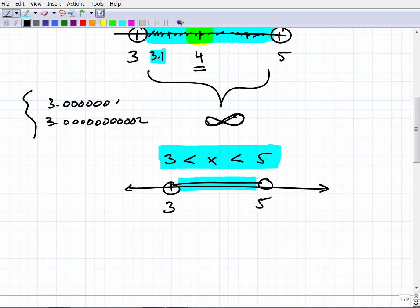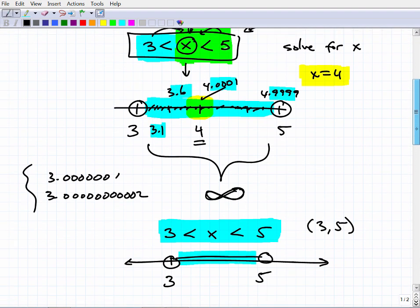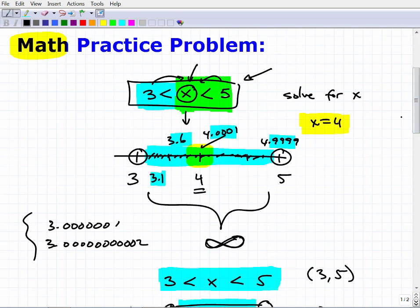And then there's other ways we can write this using set notation. That would look like this, 3 comma 5. Again, a lot of different ways we can express all the numbers, the infinite amount of numbers that are greater than 3 and less than 5. But really, the main idea here is to have you realize that when we're talking about inequalities, there's always an infinite amount of solutions.